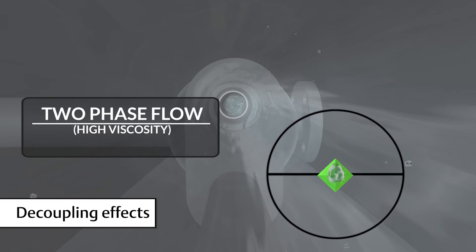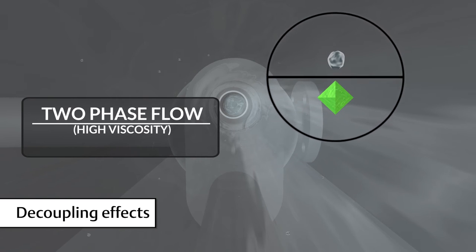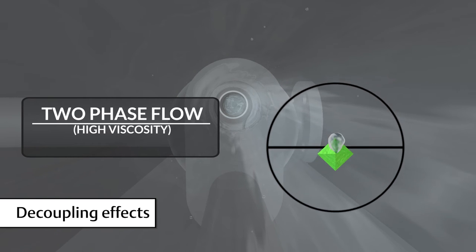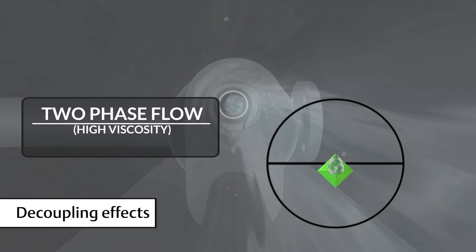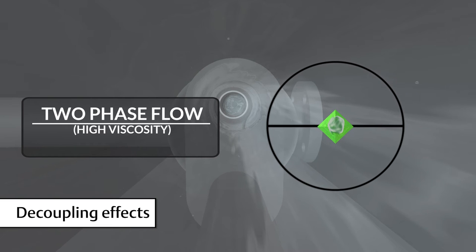And in the case of high viscosity, because the viscosity grabs onto the bubble, there is very little motion of the actual bubble, and therefore very little motion of the center of gravity. So we have very small errors.